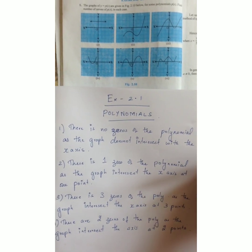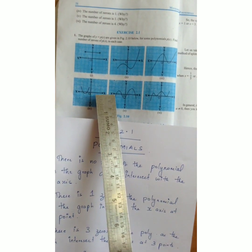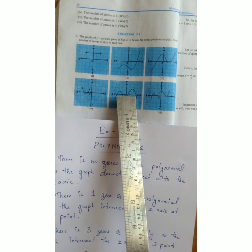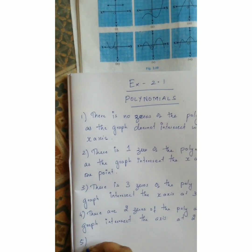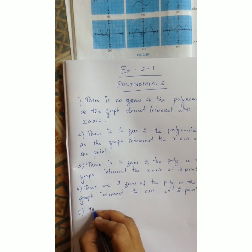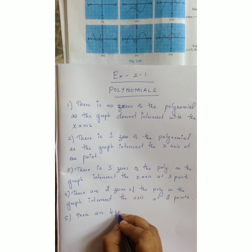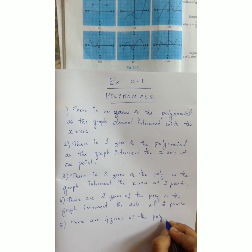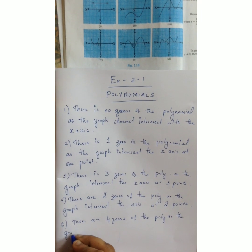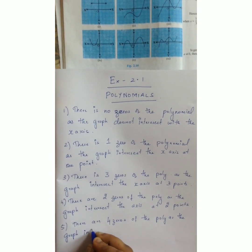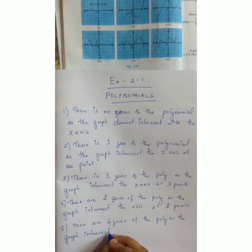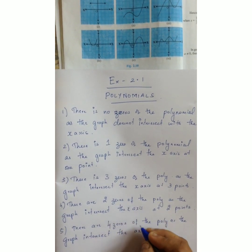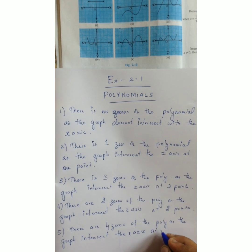In the fifth sum, the graph intersects at one, two, three and four. So the number of zeros is four. There are four zeros of the polynomial, as the graph intersects the x-axis at four points.